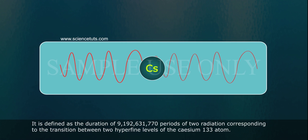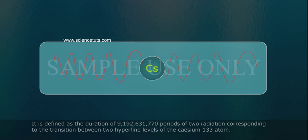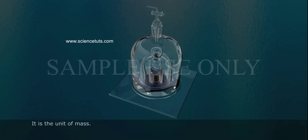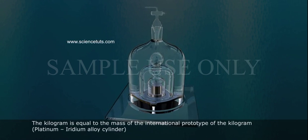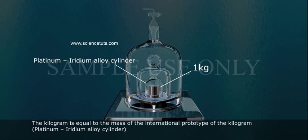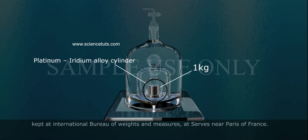Kilogram (kg). It is a unit of mass. The kilogram is equal to the mass of the international prototype of the kilogram, a platinum iridium alloy cylinder kept at the International Bureau of Weights and Measures at Sèvres near Paris, France.